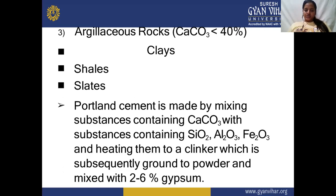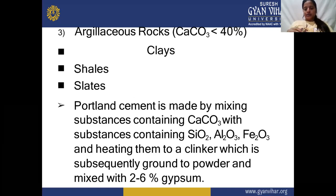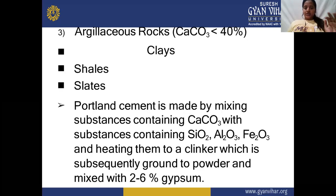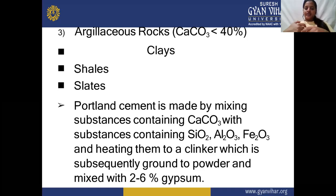Portland Cement is made by mixing substances containing CaCO3 with substances containing SiO2, Al2O3, and Fe2O3, and heating them in a clinker which is subsequently ground to powder and mixed with 2 to 6% gypsum. These materials are the main constituents of Portland Cement. They are combined and burnt into a clinker where the rock materials are properly burnt and ground to fine powder.